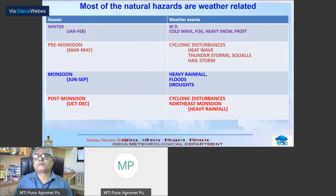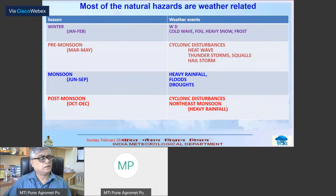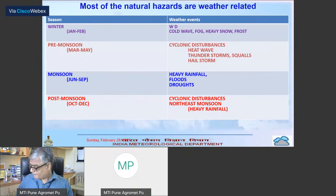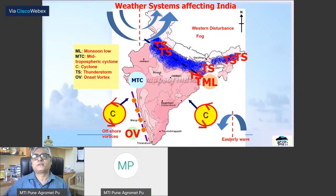In India, the different weather events across seasons include: in winter — cold wave, fog, snow, frost; in pre-monsoon season — heat wave, thunderstorms, squalls; in monsoon — heavy rainfall due to monsoon, inter-seasonal variability, sometimes droughts; then post-monsoon — cyclone, heavy rainfall. Schematically shown here, different weather systems are listed: cyclone, monsoon lows, mid-tropospheric cyclonic circulation, offshore vortex, offshore trough, monsoon trough. These are the different weather systems, as we all know.